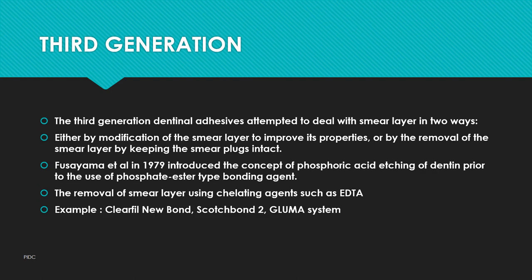Third generation dentin adhesives attempted to deal with the smear layer in two ways: either by modification of the smear layer to improve its properties, or by removal of the smear layer while keeping the smear plugs intact. Fusayama et al. in 1979 introduced the concept of phosphoric acid etching of dentin prior to the use of a bonding agent. Removal of the smear layer is achieved using chelating agents such as EDTA. Examples: Clearfil, Scotchbond, and the Gluma system.